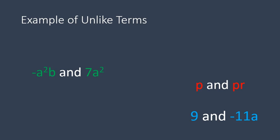9 and negative 11a. Negative 11a has a variable of a. 9 has no variable at all. So they are not the same. 3z and negative b. Z and b rhyme, but they are not the same. Unlike terms.